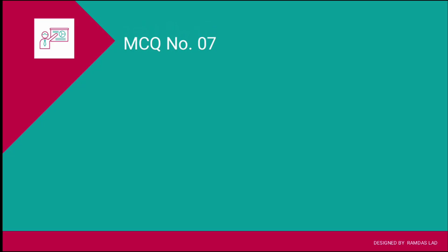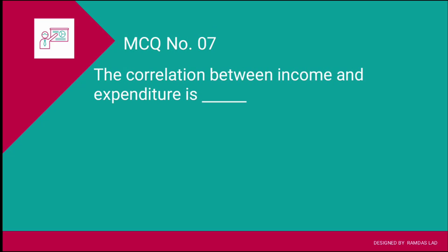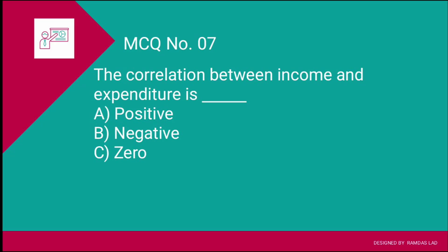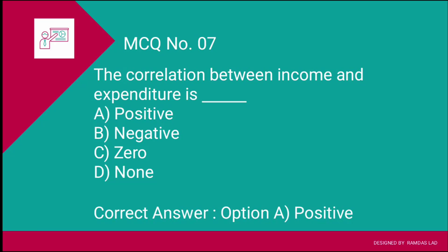Question number seven: The correlation between income and expenditure is? When income increases, expenditure also increases; when income decreases, expenditure also decreases. The options are: A) positive correlation, B) negative correlation, C) zero or no correlation, D) none of these. Since both variables move in the same direction, there is a positive correlation between income and expenditure. The correct answer is option A — positive correlation.